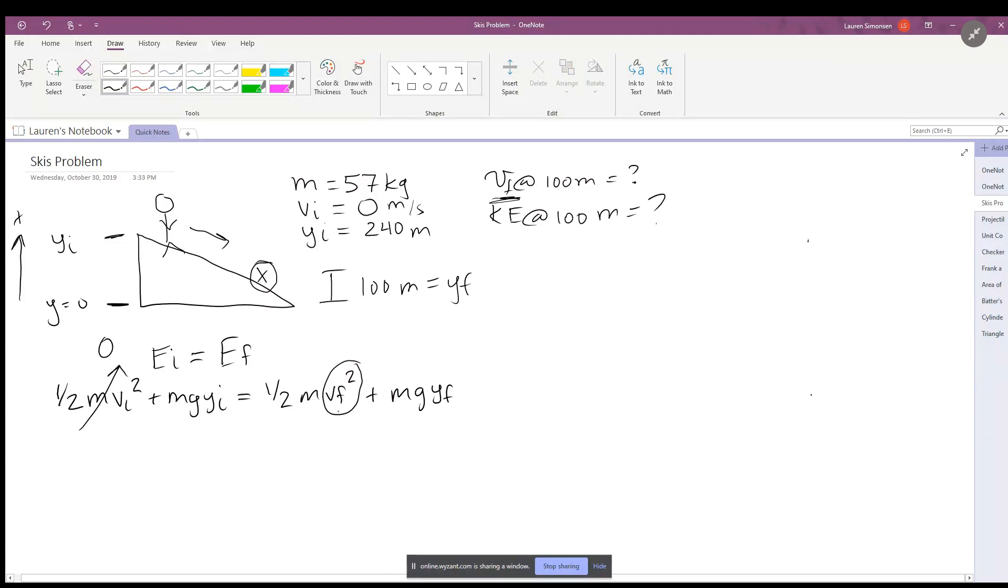Now this makes it easier to solve for the final velocity at 100 meters. Doing some quick algebra, we get g y initial minus y final.